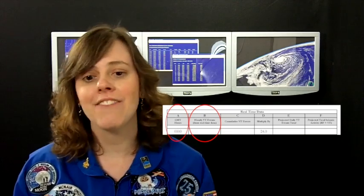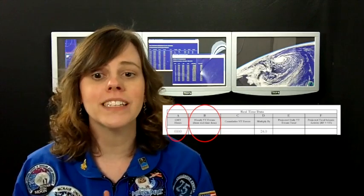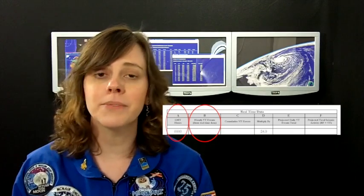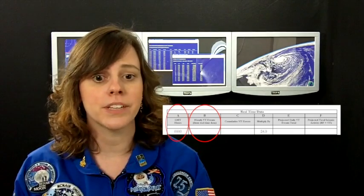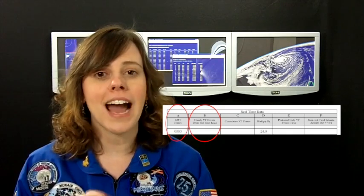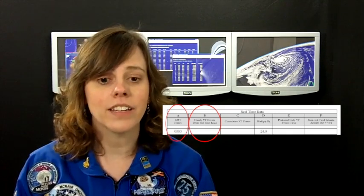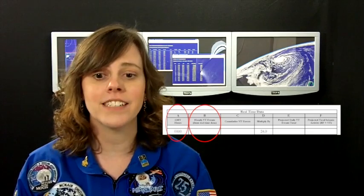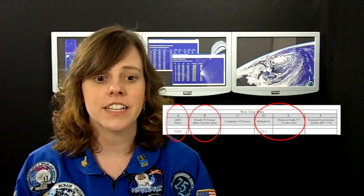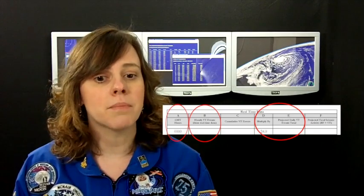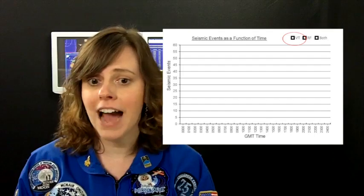For the first reading, you will not have anything to add for the cumulative number, so just repeat the hourly VT for this reading. Using the 24-hour multiplier, calculate the projected hourly VT event number and record it on the data sheet. Record this number on the hourly VT graph as well.